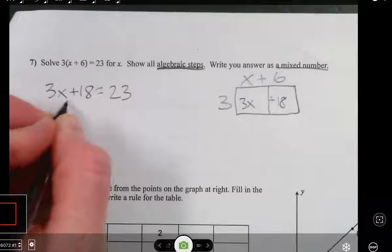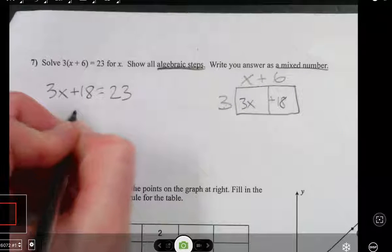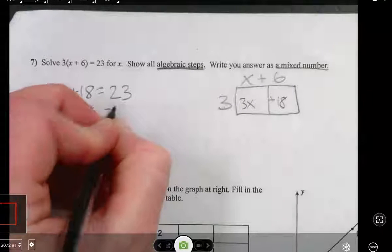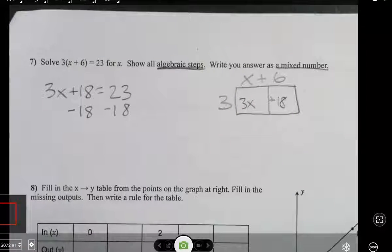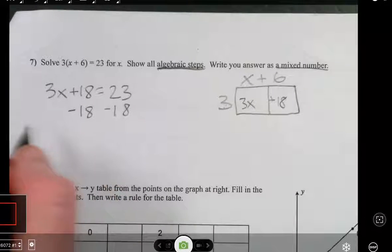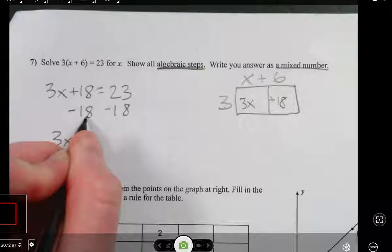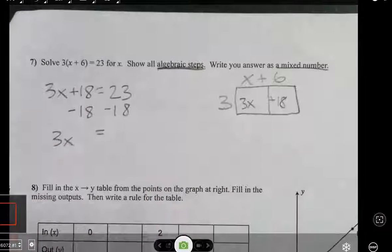Alright, so now we want to try to get x by itself over here, so I'm going to take 18 away from both sides. Think about your tiles, just take 18 away from both sides. Those will cancel. 23 minus 18 is 5.